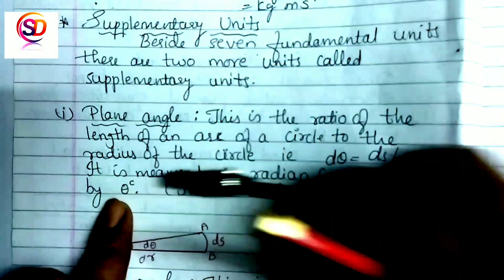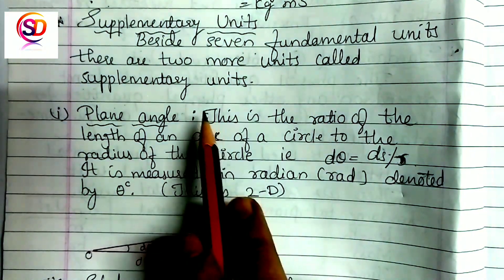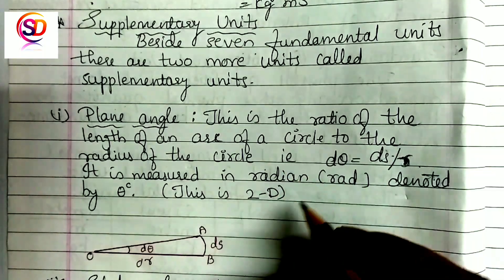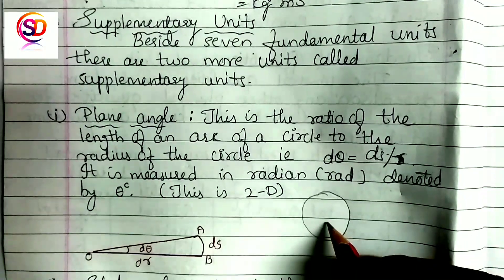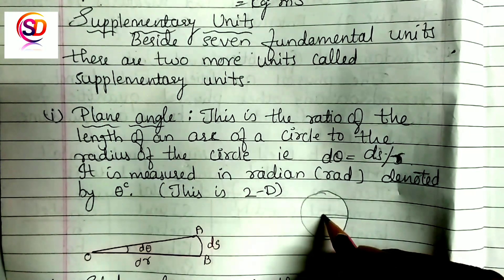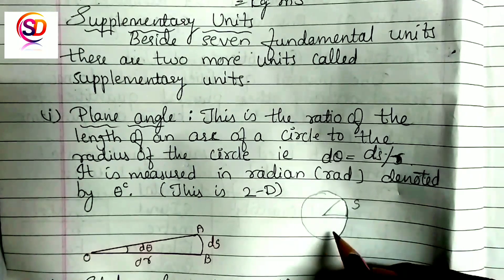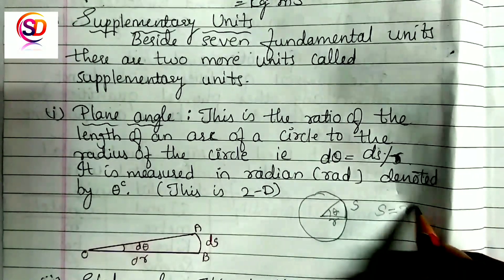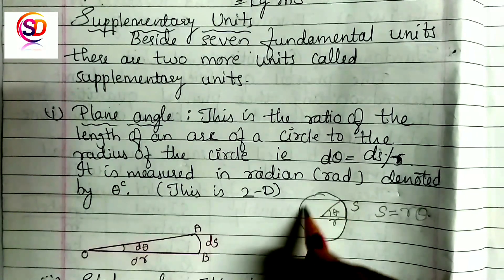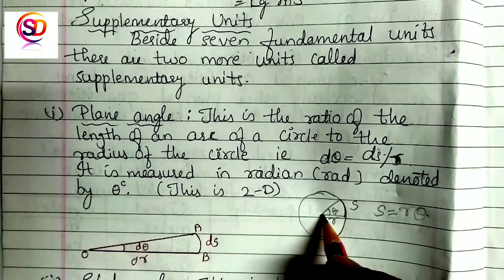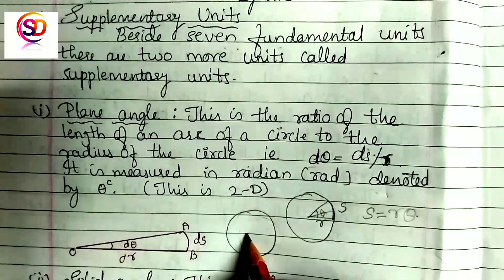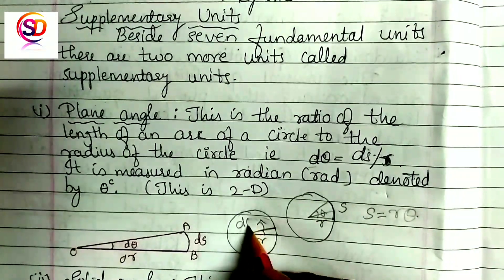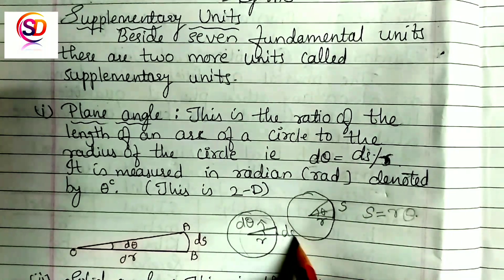The plane angle is defined as the ratio of the length of an arc of a circle to the radius of that circle. If the radius is R and the length of the arc is S, then theta equals S divided by R. For a very small angle D-theta and a corresponding very small arc length DS, the formula becomes D-theta equals DS divided by R.